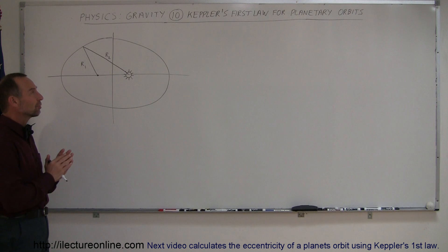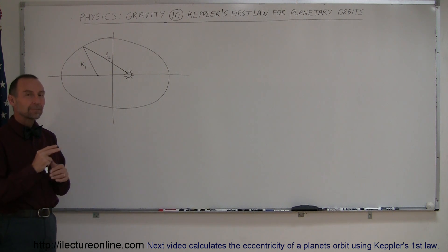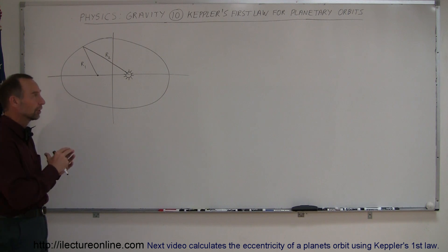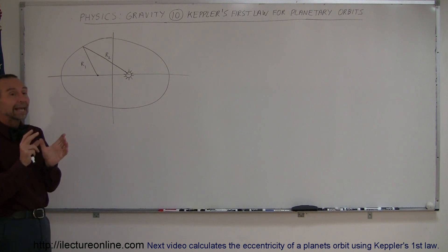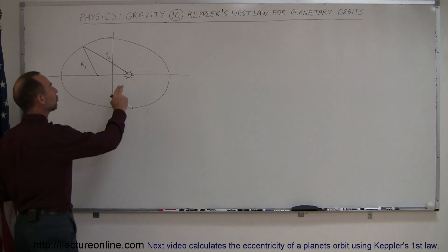For many centuries, people always had trouble figuring out the planetary orbits because they assumed that the orbits were circular, but they weren't. Kepler figured that out. He figured out that the orbits were elliptical, and not only that, that the sun was one of the two foci.